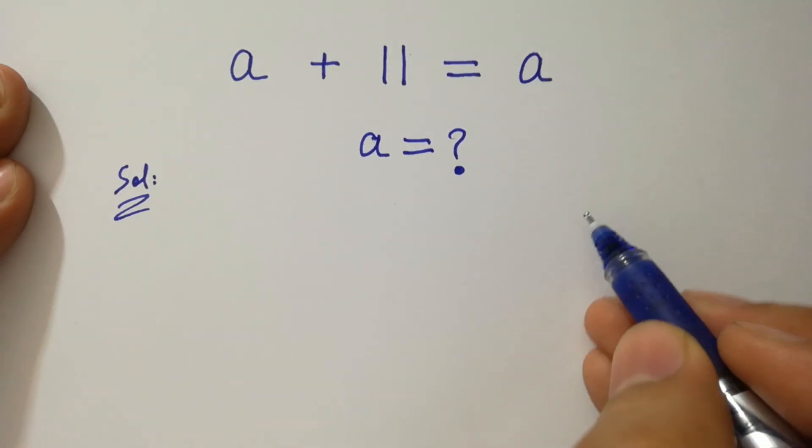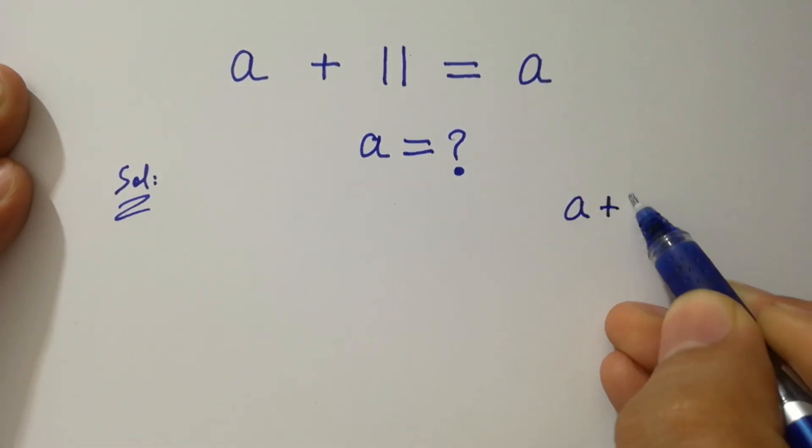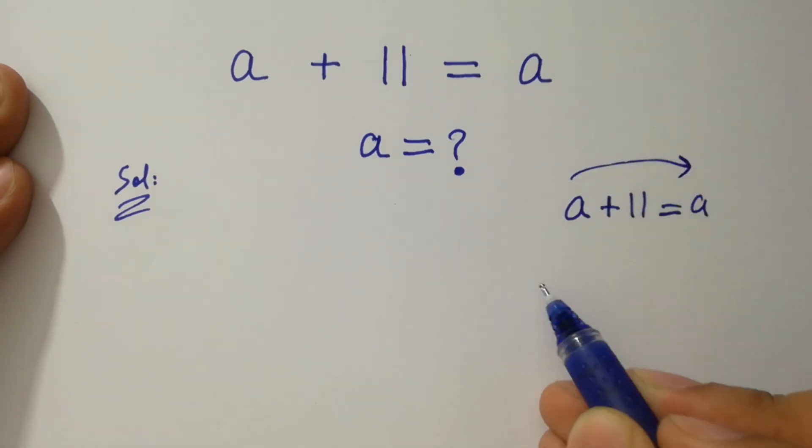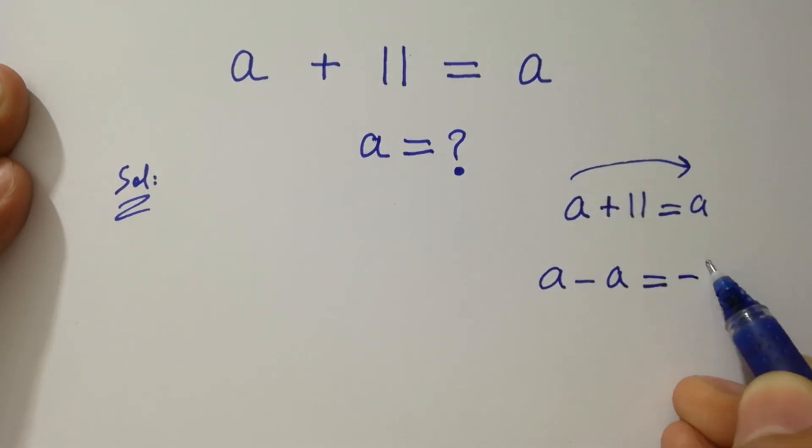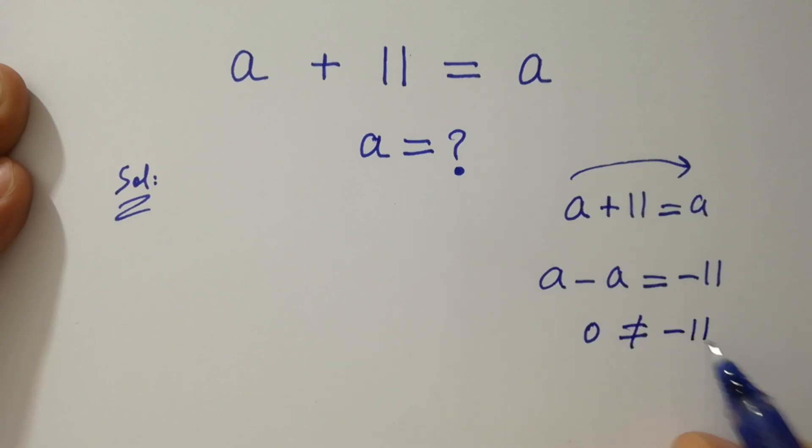If you see a plus 11 equal to a, then a minus a will be equal to minus 11. a minus a is 0, which does not equal to minus 11.